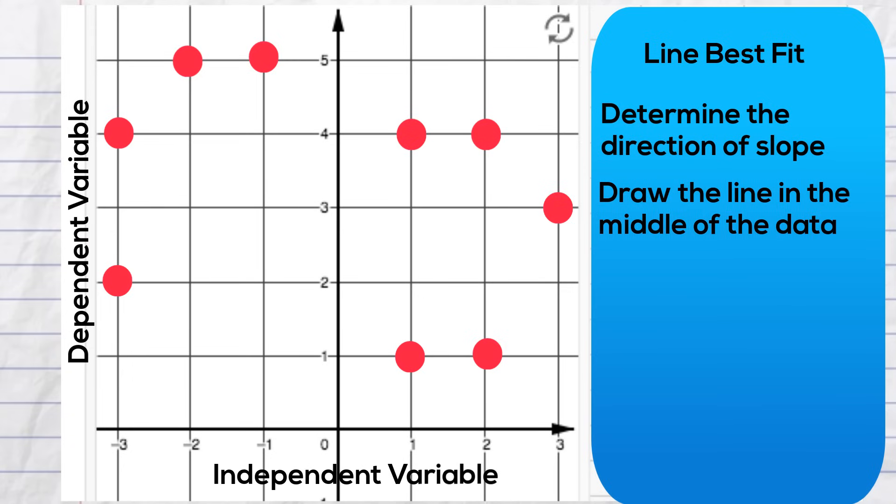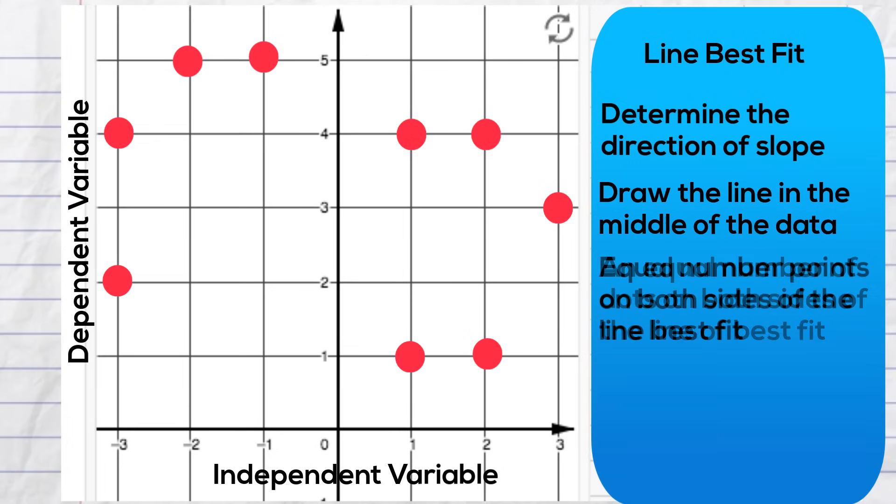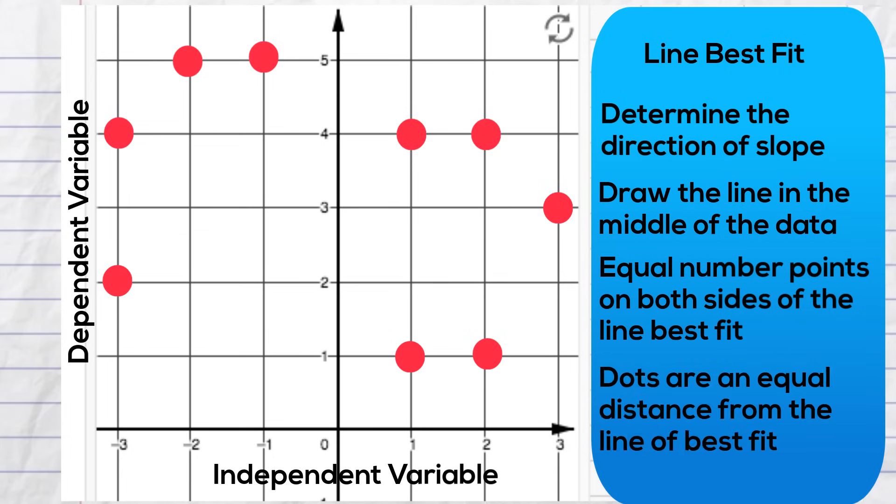Next, draw the line in the middle of the data as best you can. You can try to have an equal number of dots on both sides of the line of best fit. And finally, the dots should be an equal distance from the line of best fit.